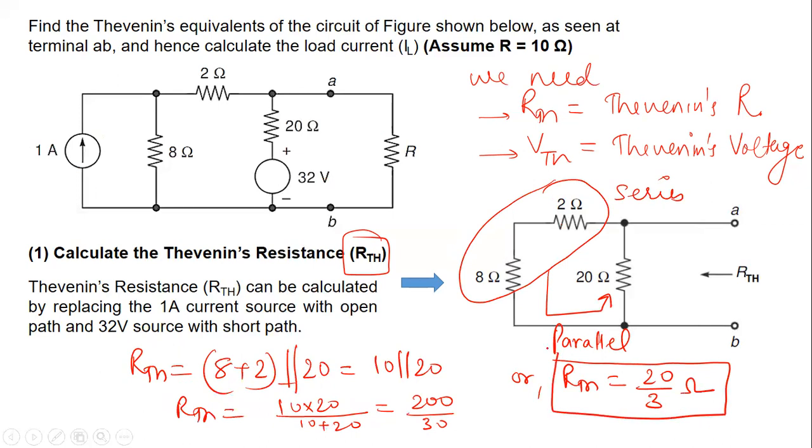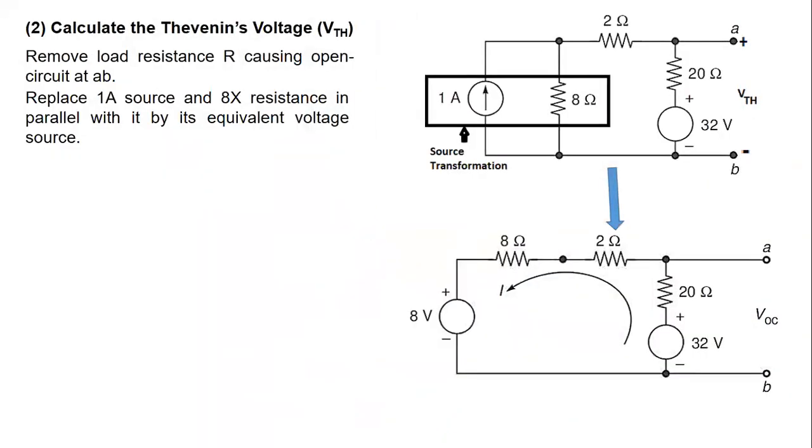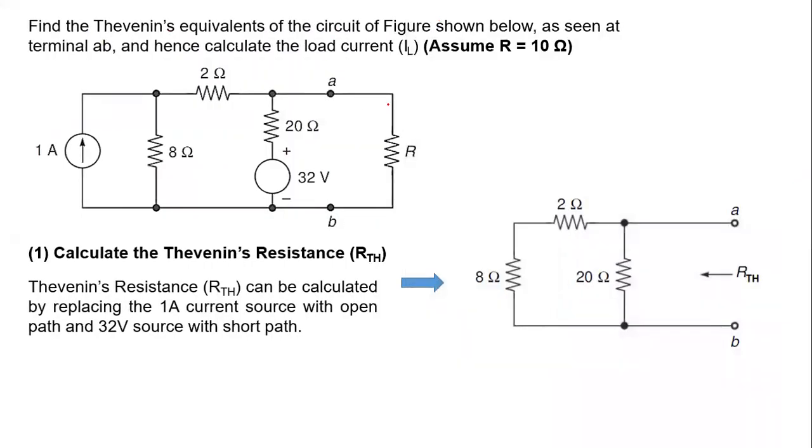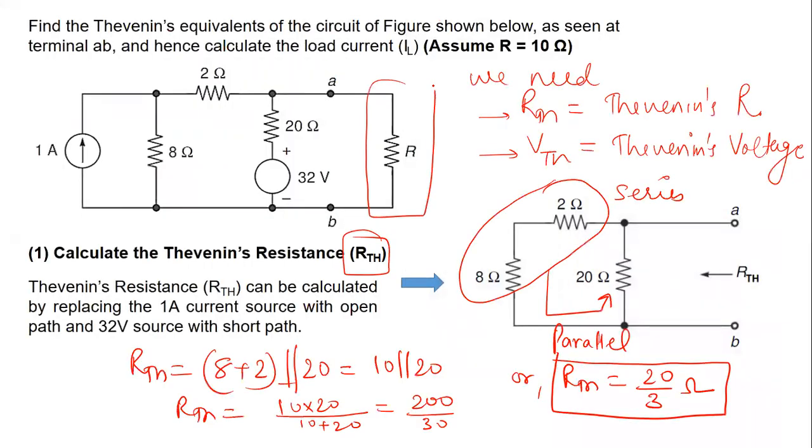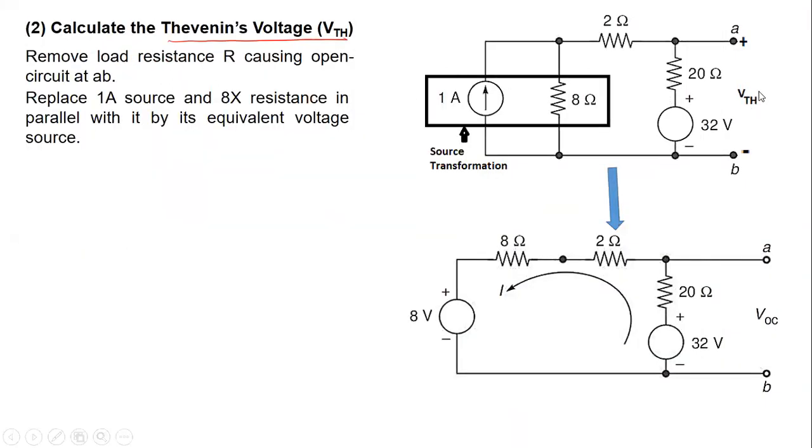This is the first parameter to get the Thévenin's equivalent. The second parameter that we need is Thévenin's voltage. To calculate Thévenin's voltage, we will remove this load resistance and make the load terminals open like this. We will not do anything with the sources present in the network. They will remain as is. We are measuring VTH across these open load terminals.